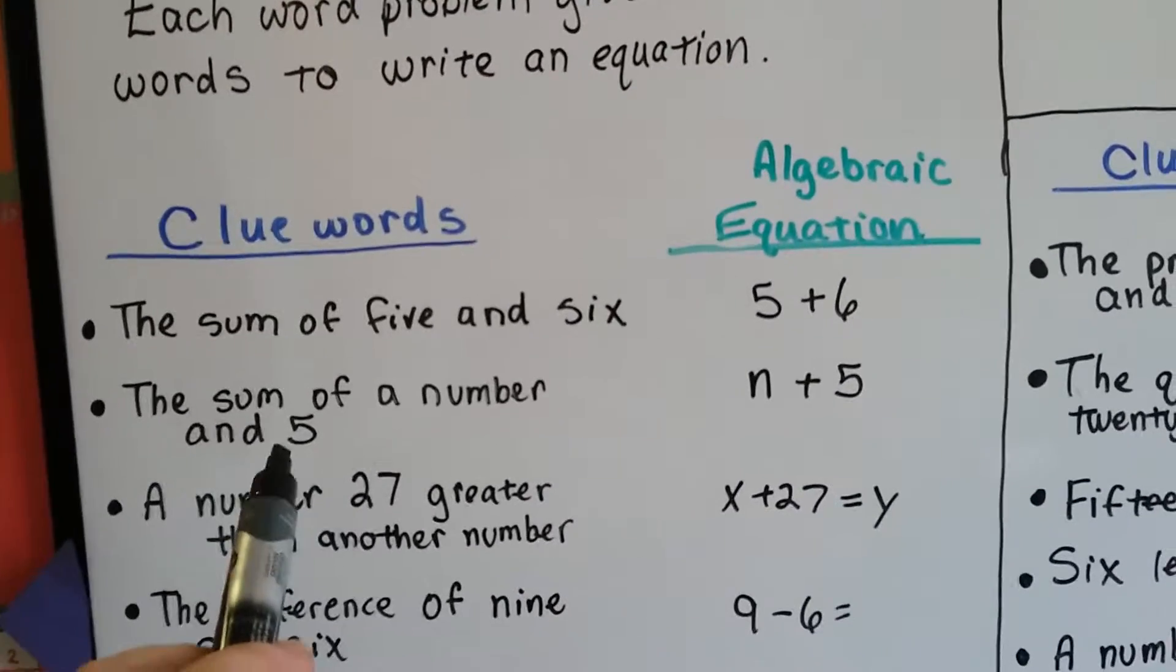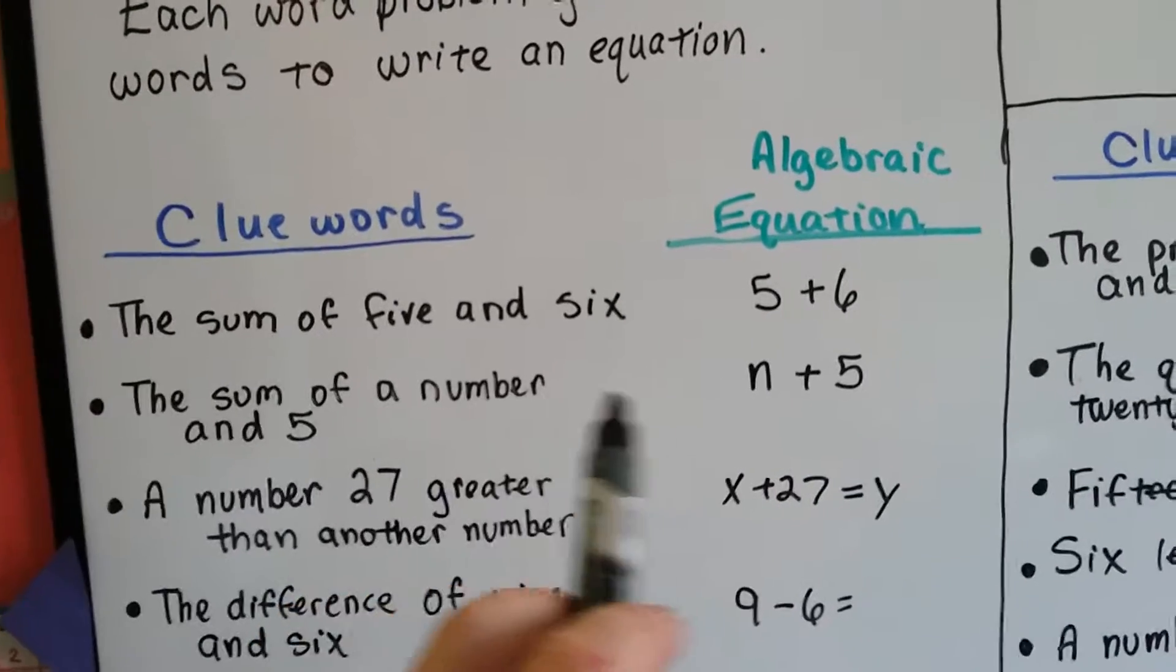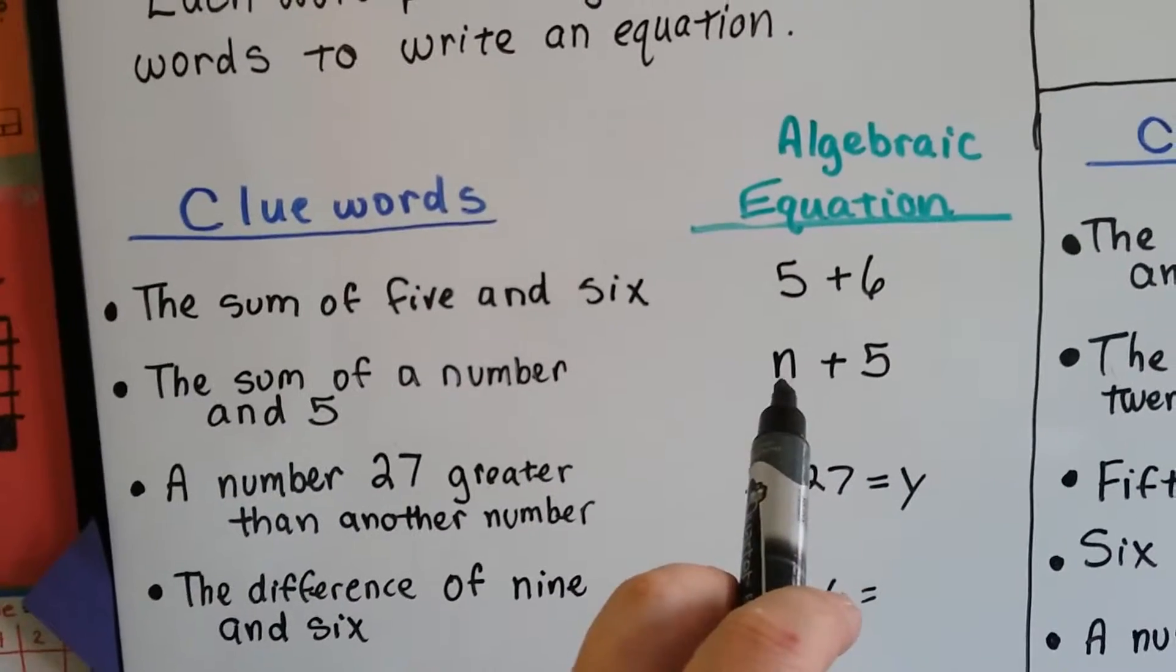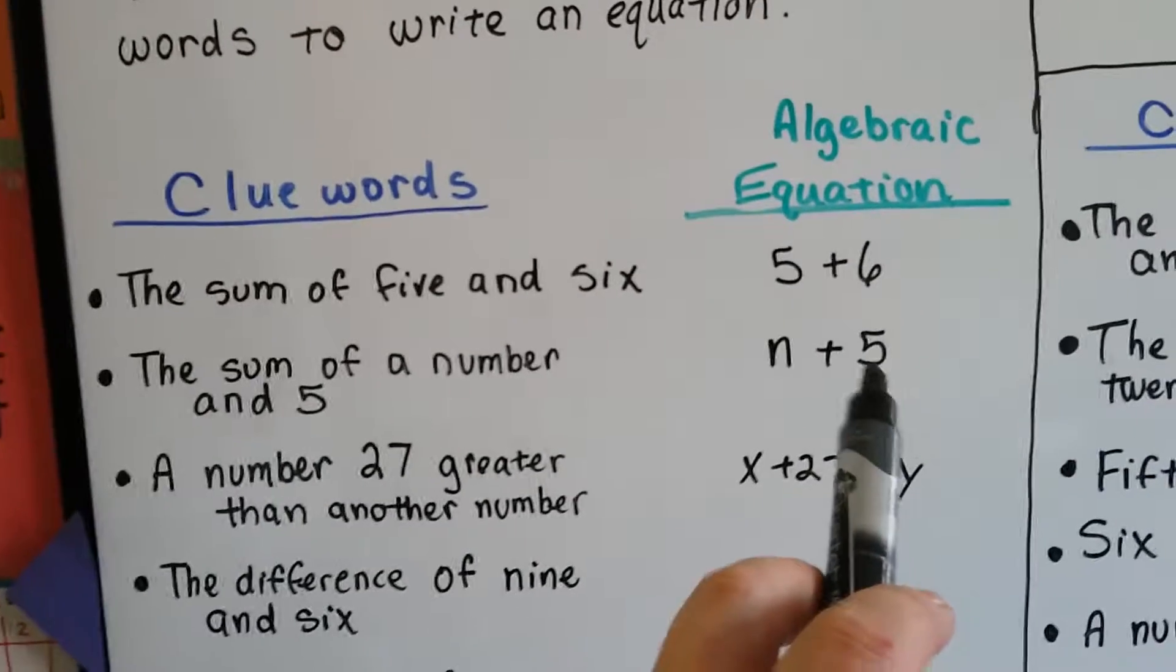The sum of a number and 5 is addition. We can use x or n to take the place of the number and we have plus 5.